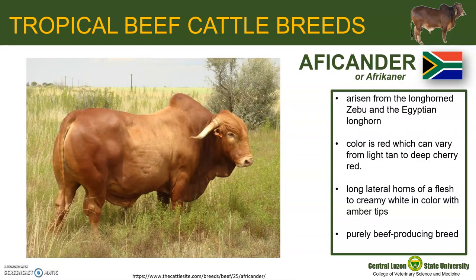Afrikaner arose from the longhorn zebu and the Egyptian longhorn and is probably the most popular indigenous breed in South Africa. The breed is typically red, which can vary from light tan to deep cherry red. They have long lateral horns of a flesh to creamy white color with amber tips. It is a heavy beef type animal with good meat quality but shows lactational anestrus in times of environmental stress.